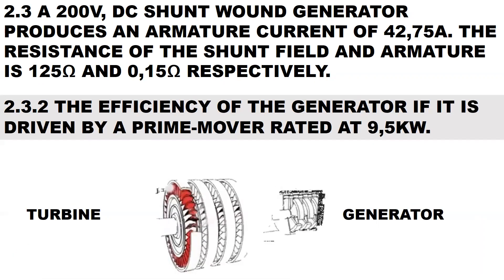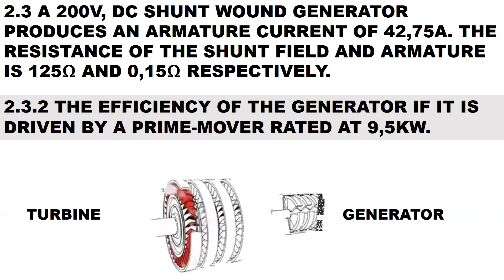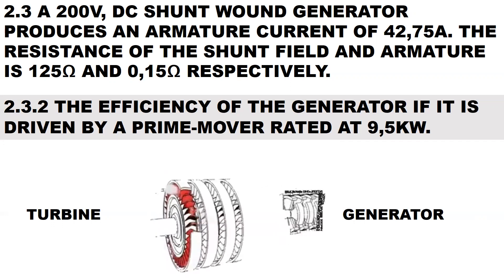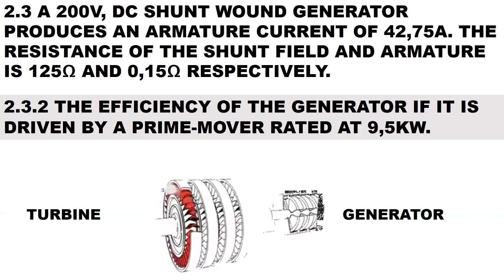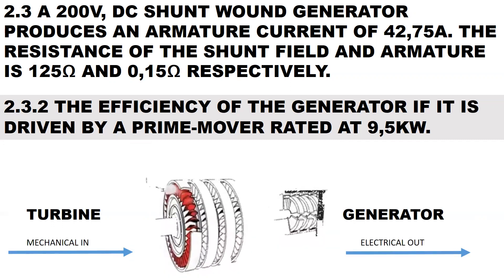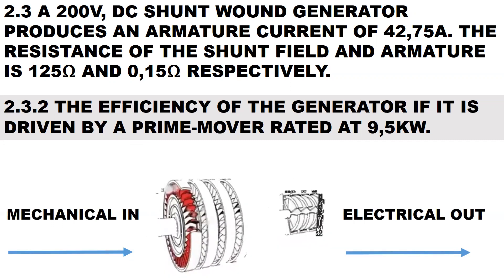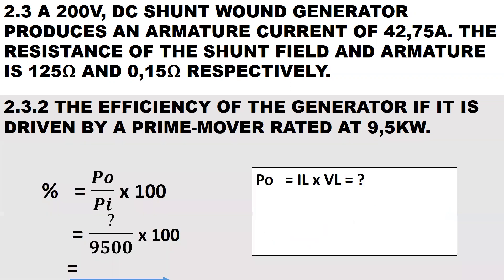The second part of the calculation is quite difficult. For a shunt wound generator, the moment you are given an efficiency, we'll always be using power out in our formulas. Here we have a turbine driving a generator and this prime mover is rated at 9.5 kilowatts. For a generator, it is mechanical in and electrical out. Before we can calculate the efficiency, we first need to determine the output power. The input power of the prime mover is 9500 watts.